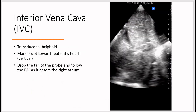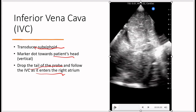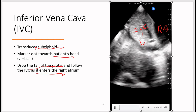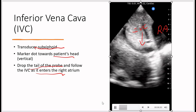To get the IVC view from the subcostal position, rotate the probe marker counterclockwise 90 degrees and raise the probe slightly to achieve a roughly perpendicular angle to the patient's skin. The marker points toward the patient's head and you drop the tail of the probe, following the IVC as it enters the right atrium.